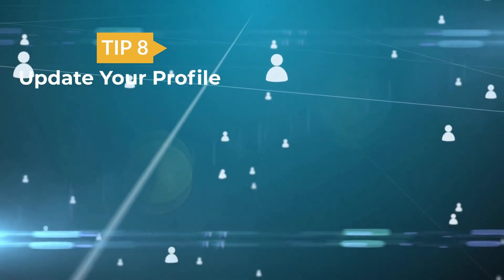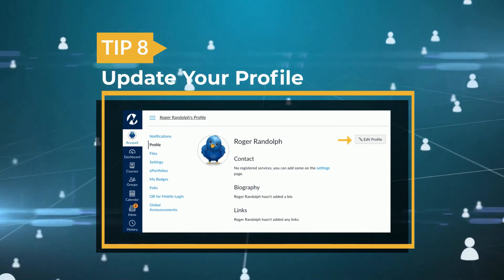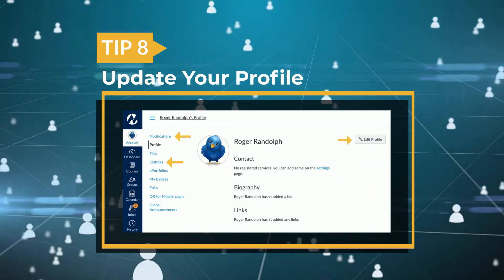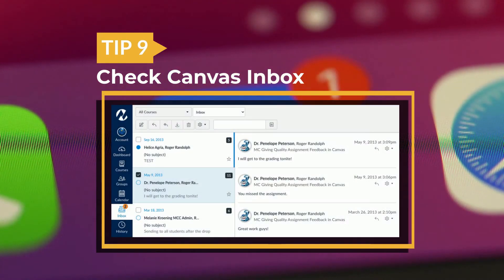8. Update your profile, notifications, and settings. 9. Check the Canvas inbox for email-type communications from your instructor or classmates. You can also send messages to your instructor.